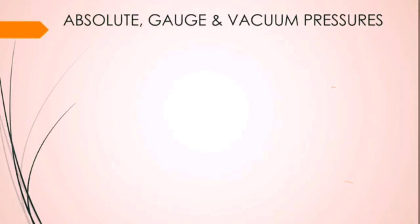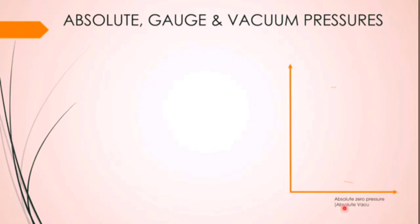Let us now see what absolute, gauge, and vacuum pressures are. Let me draw a horizontal line showing absolute zero pressure, also known as absolute vacuum, on the y-axis. Pressure starts from zero and goes on increasing upward.